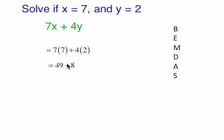So the 7 times 7 is 49, the 4 times 2 is 8, then you add the 49 and the 8, and you get 57. And that's our answer. Have a good day.